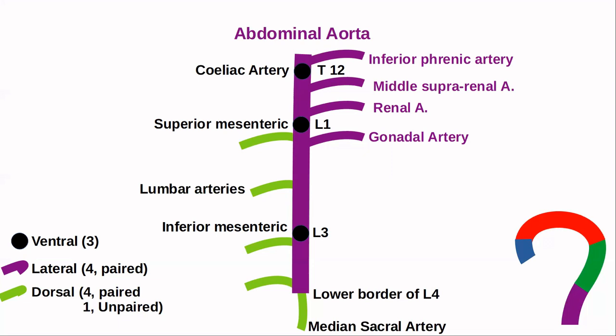To summarize: three unpaired ventral arteries — celiac, superior mesenteric, and inferior mesenteric — supply the gut. Four paired lateral arteries supply the kidney, suprarenal, diaphragm, and gonads. The dorsal branches are the four paired lumbar arteries and the median sacral artery.